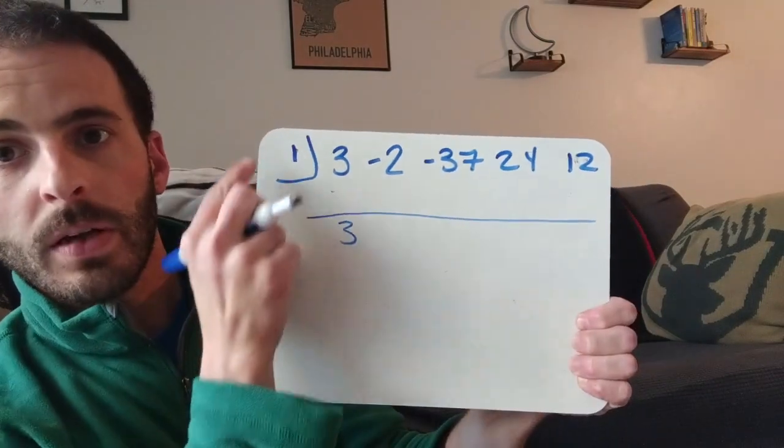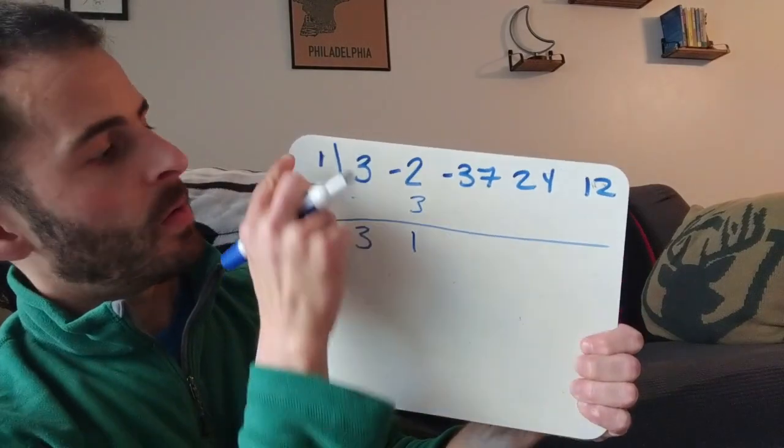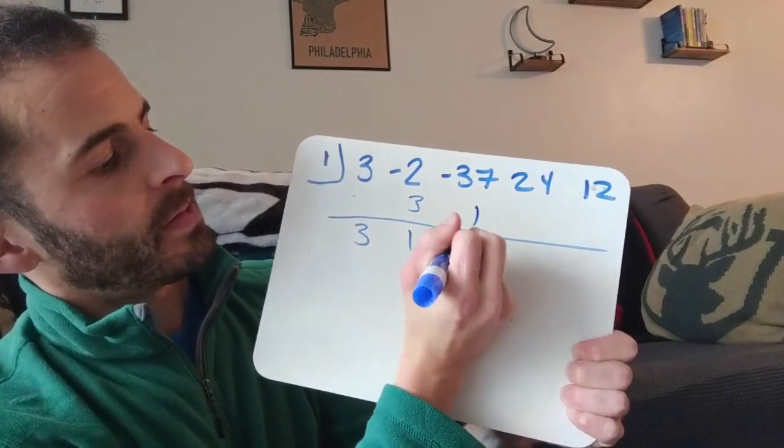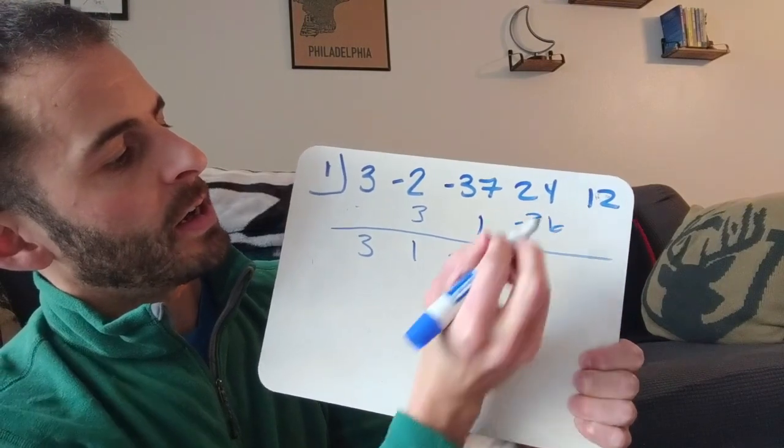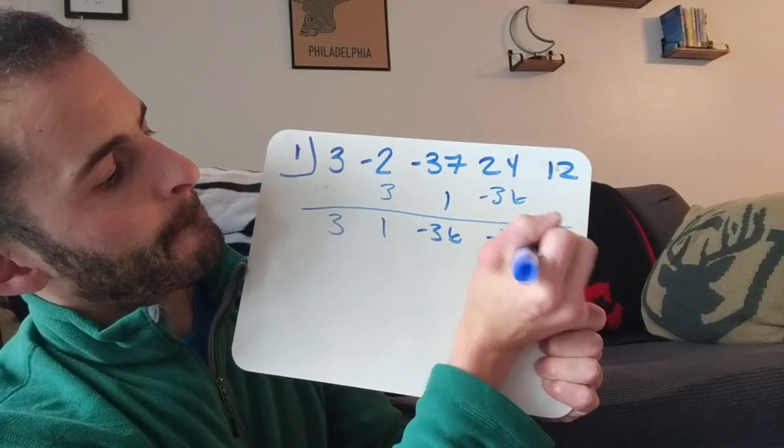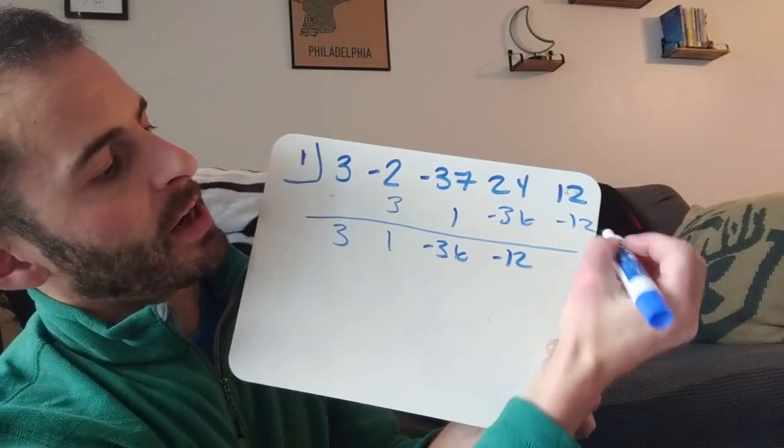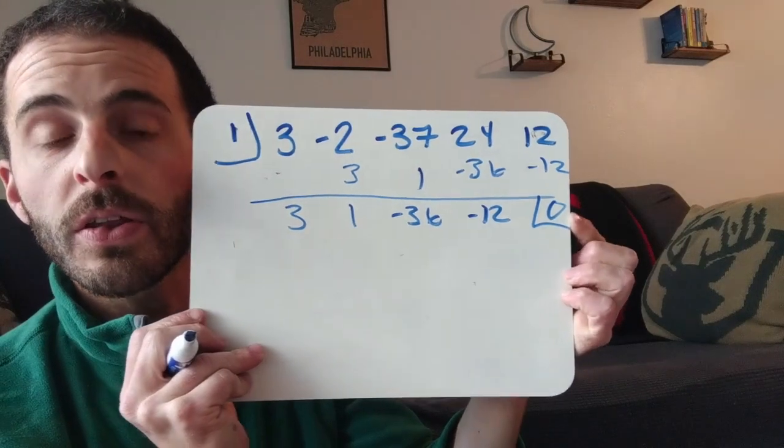Skip a line and draw an equals bar. Bring the 3 down. 1 times 3 is 3. Add it up. 1 times 1 is 1. Add it up. 1 times negative 36 is negative 36. Add it up. 1 times negative 12 is negative 12. Add it up. And we get 0 as our remainder, which is a good thing.